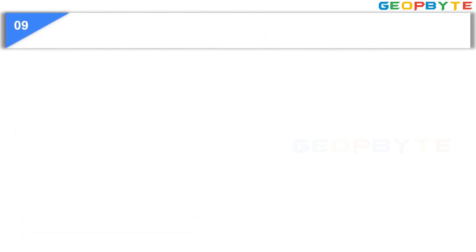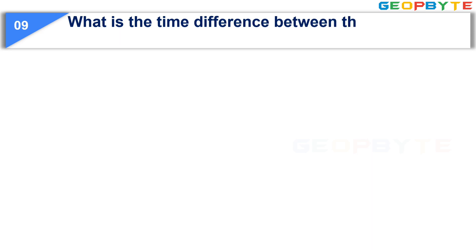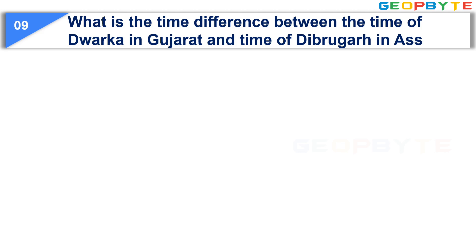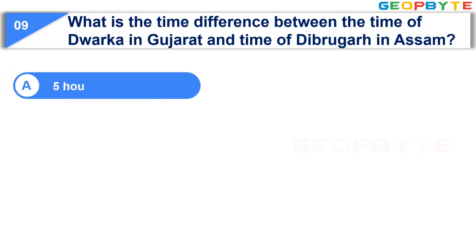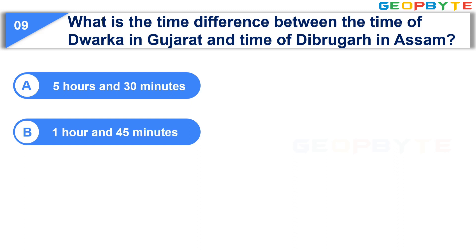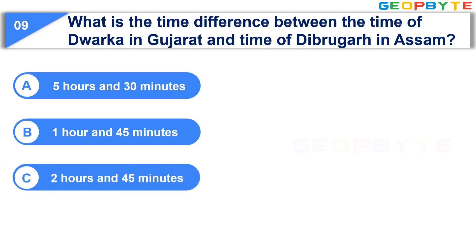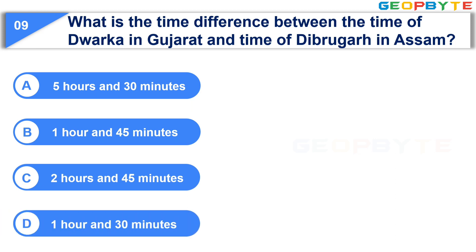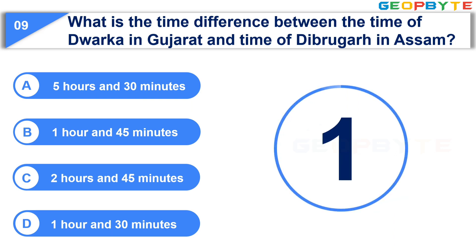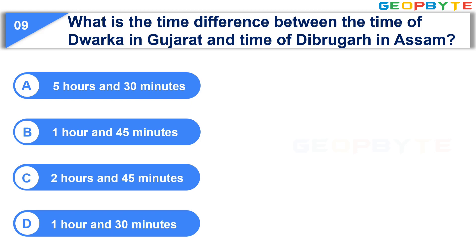Moving to the ninth question. What is the time difference between the time of Dwaraka in Gujarat and the time of Dibrugarh in Assam? Option A: 5 hours and 30 minutes. Option B: 1 hour and 45 minutes. Option C: 2 hours and 45 minutes. Option D: 1 hour and 30 minutes. Your time starts now. Your time is up and the correct answer is Option B: 1 hour and 45 minutes.